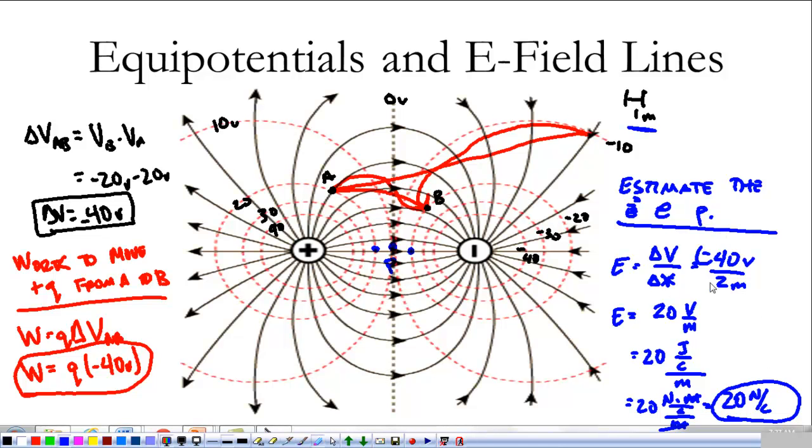Now, this negative sign here is all about direction. And we don't even have to worry about that because we know the direction points from positive to negative. So that's 20 newtons per coulomb pointing down the hill. So these are some things that we can do with equipotential lines and some of those relationships that we just talked about.